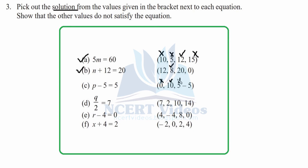For part d, p divided by 2 equal to 7: trying 7 divided by 2 gives a fractional value, so we cross it. 2 divided by 2 is 1, not equal to 7, cross it. 10 divided by 2 is 5, not equal to 7. But 14 divided by 2 is 7 — that is correct, so 14 is the solution.